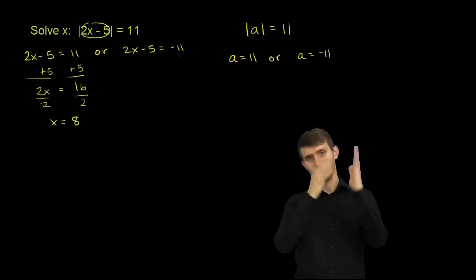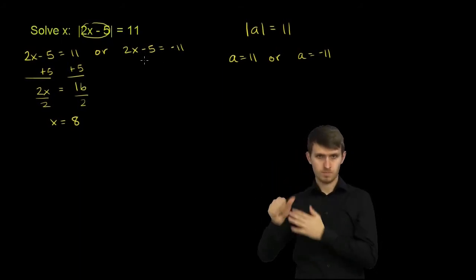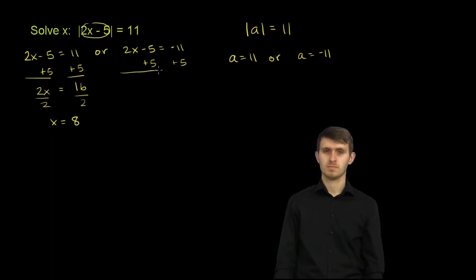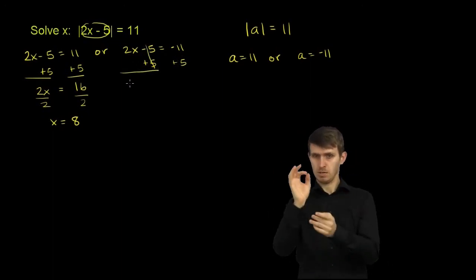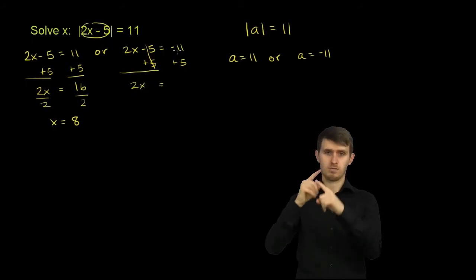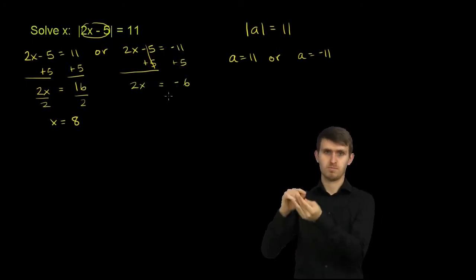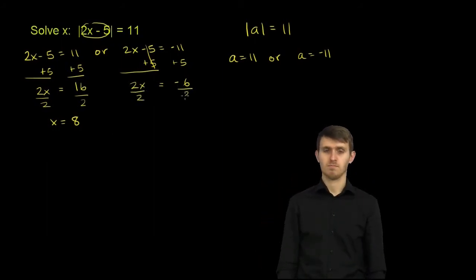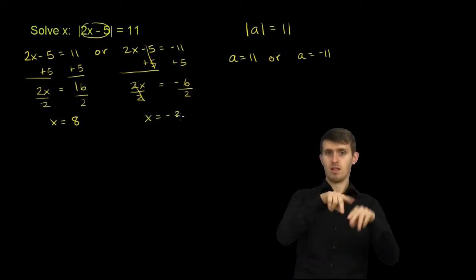Now let's do the other situation: 2x minus 5 is equal to negative 11. Let's add 5 to both sides. The left-hand side, we just get 2x — the 5's cancel out. 2x is equal to negative 5 plus 11, wait — negative 6. Now we divide both sides by 2, and we get x is equal to negative 3.